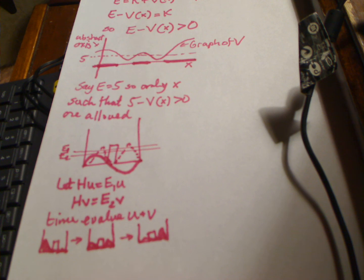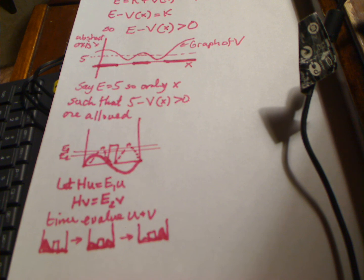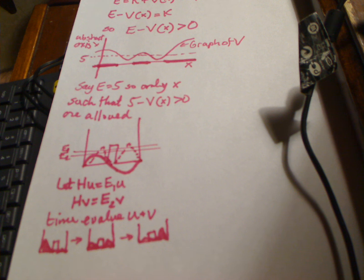Then you wait. At time one, you look, and you'll find that half the time the particle is on the left side and half the time on the right side. Set up the experiment again and wait until time two — now most of the time you'll find the particle on the right side, and hardly ever on the left. One interesting thing throughout this evolution: if at any time you try to look for the particle on the barrier, the probability is tiny — you'll essentially never find it there. So you begin on one side, get to the other side, but you're never in the middle. You sort of jump from one side to the other without ever being in the middle.